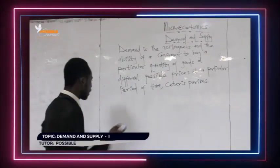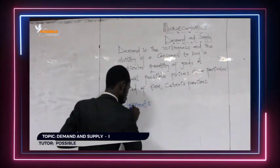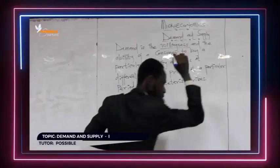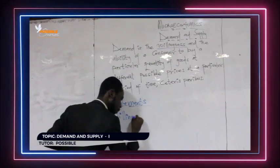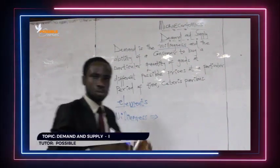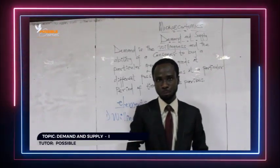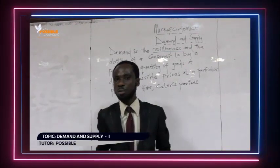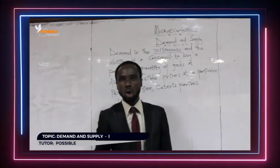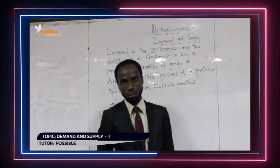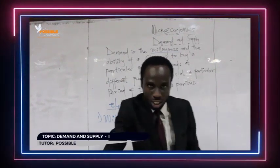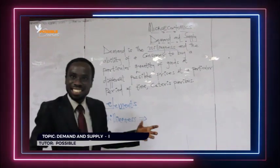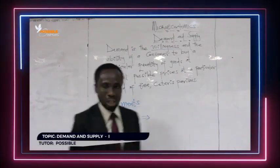Looking at this definition, there are some elements which must be deduced. The first one is that demand is a willingness. When we talk about willingness — if you go to a store and you want to buy an iPhone, and you meet many phones like Motorola and Samsung — what pushes you to go there with the mentality of buying an iPhone? This means you have the desire to buy that iPhone. In economics, willingness is popularly known as desire.